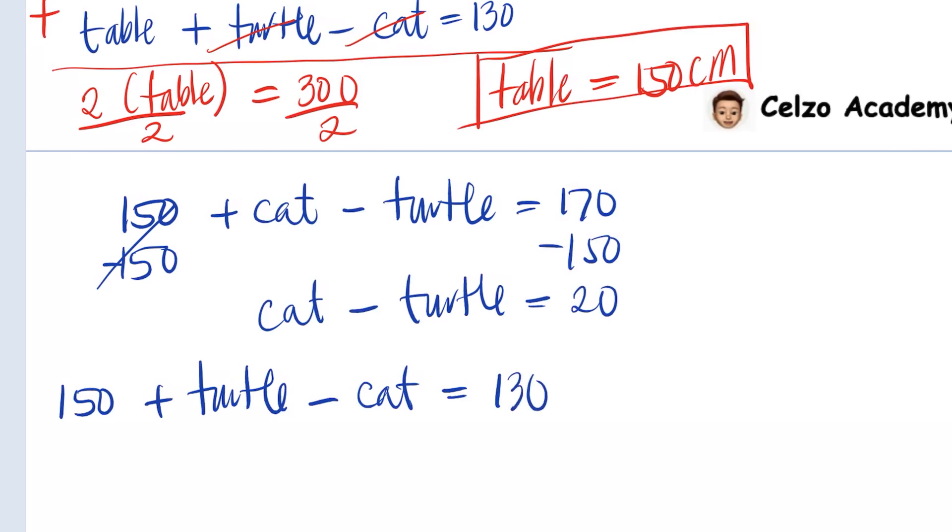Subtracting 150 from both sides, 150 minus 150 is 0. Then we now have turtle minus cat is equal to negative 20.